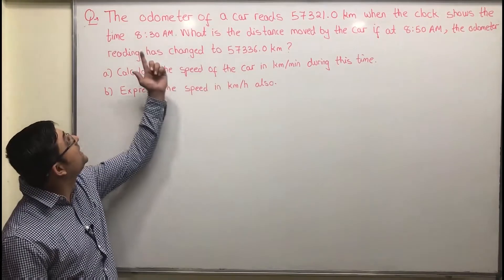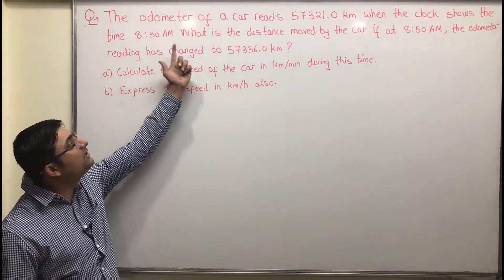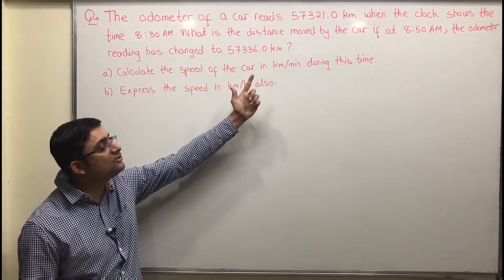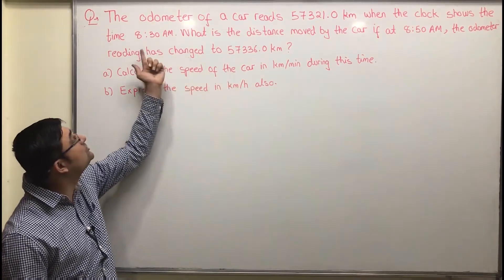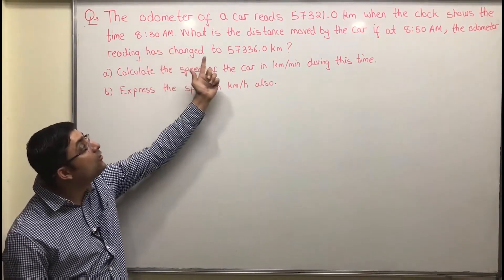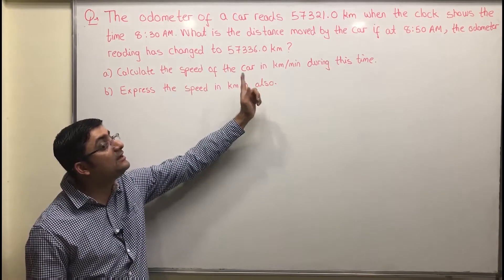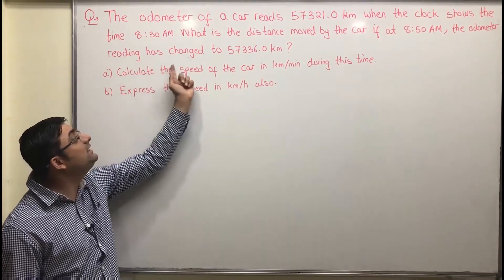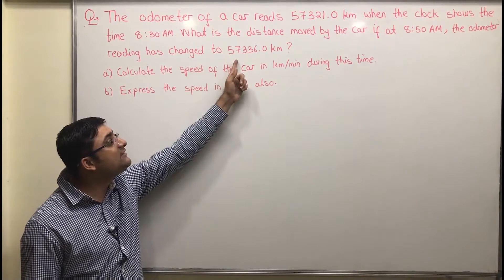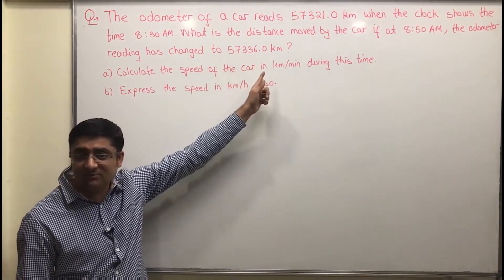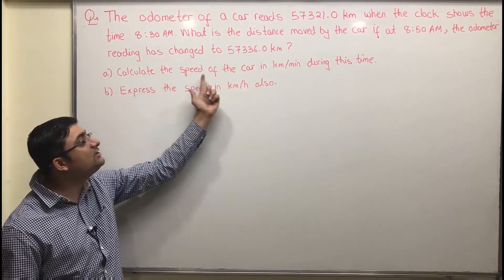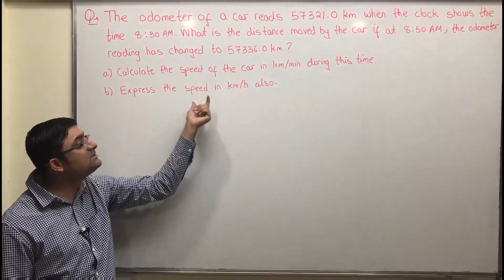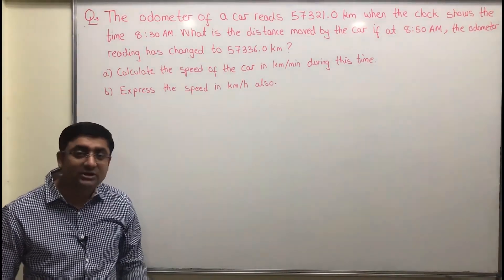Let's read the question. The odometer of a car reads 57321.0 km when the clock shows the time 8:30 AM. What is the distance moved by the car if at 8:50 AM the odometer reading has changed to 57336 km? Also, calculate the speed of the car in km per minute during this time and express the speed in km per hour.